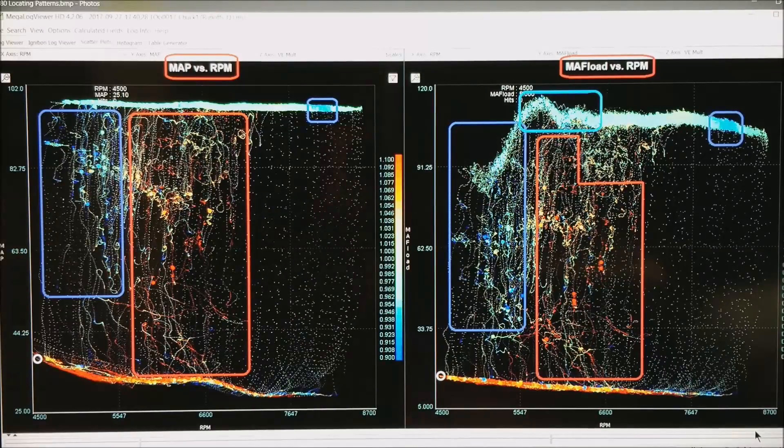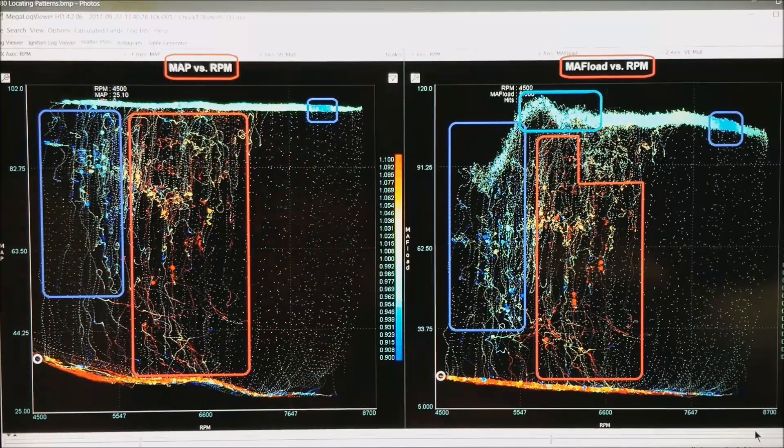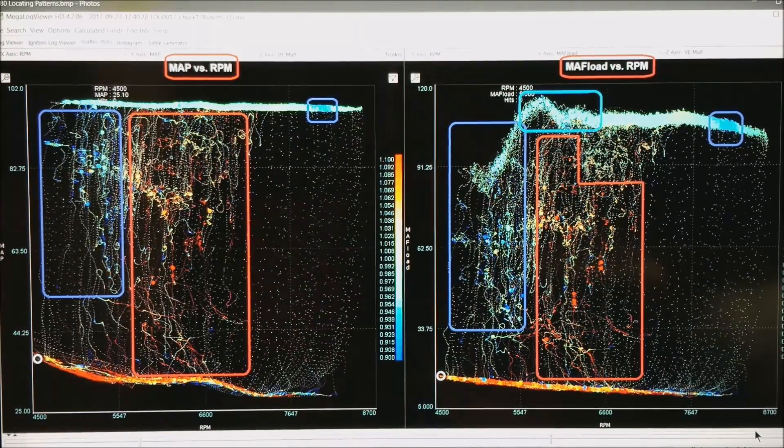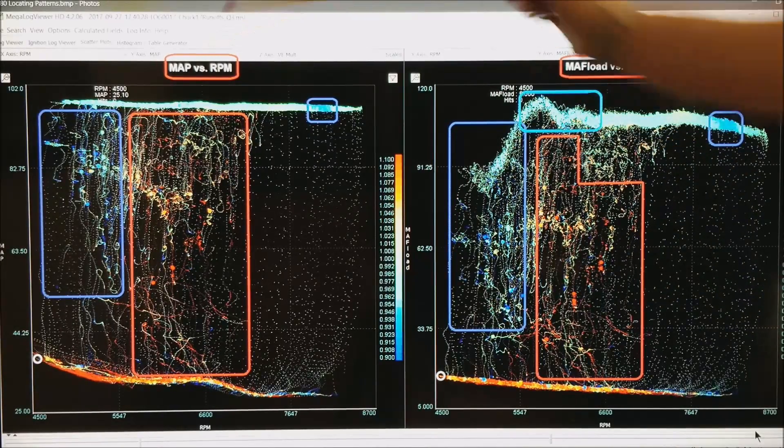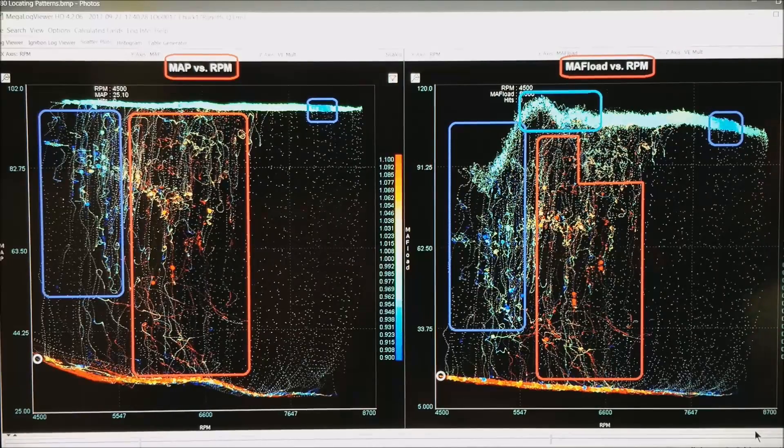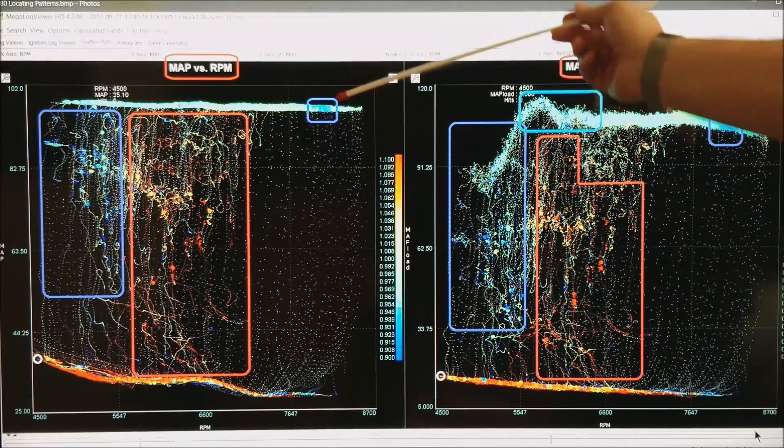Let me go ahead and highlight the areas where I might do some adjustment. And in this case you could probably do the adjustment almost equally well in mass air flow or in manifold air pressure speed density. Both of them are fairly easy to hit right here.